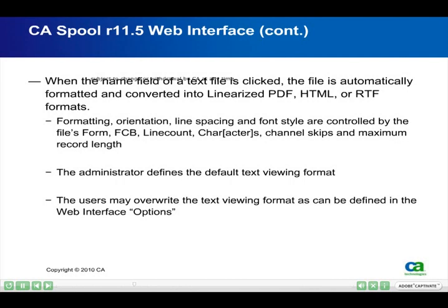When the name field of a text file is clicked, the file is automatically formatted and converted into linearized PDF, HTML, or RTF formats. Formatting, orientation, line spacing, and font style are controlled by the file's form, FCB, line count, characters, channel skips, and maximum record length. The administrator defines the default text viewing format, and users may overwrite the text viewing format as defined in the Web Interface options.